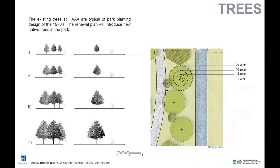The existing trees at HAAA are quite typical of park planting design of the 1970s — tough species that would survive urban conditions. But the renewal plan intends to introduce new native trees in the park, which came up quite often in your comments and suggestions. Some schematics illustrate the tree growth that will eventually achieve canopy coverage. The forestry department is on a campaign to increase canopy coverage in the City of Hamilton, and this is a real opportunity to contribute to that effort at HAAA.